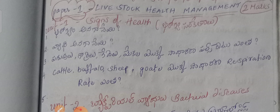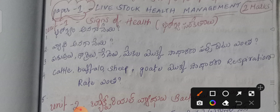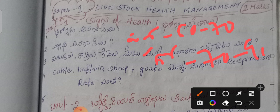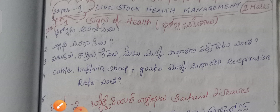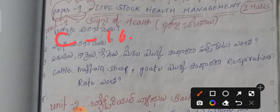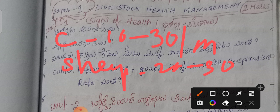Respiration rate: cattle is 15–40 breaths per minute. Goat is 10–30 breaths per minute. Sheep is 20–30 breaths per minute. Cattle young is 15–40 breaths per minute. Goat is 20–30 breaths per minute.